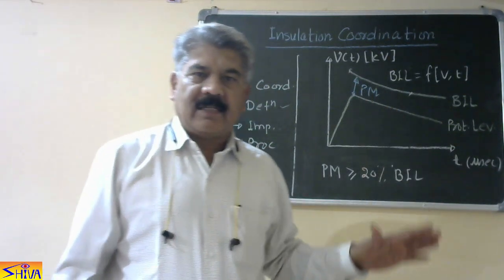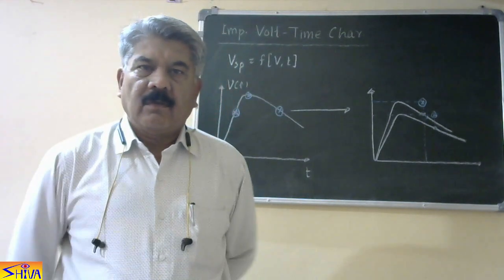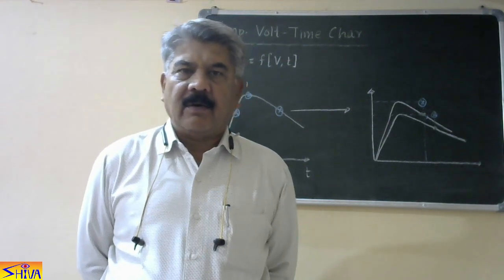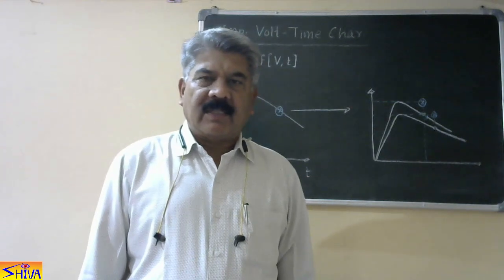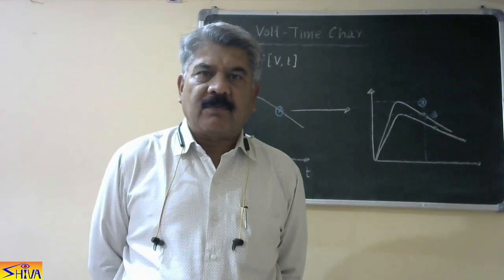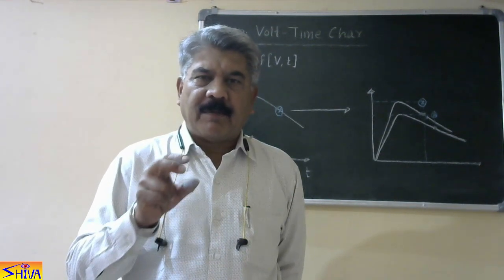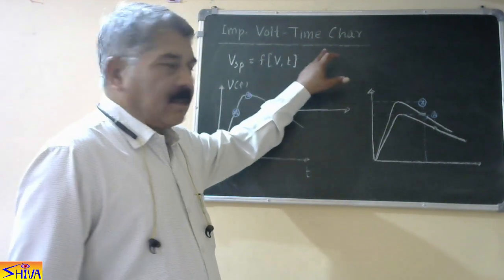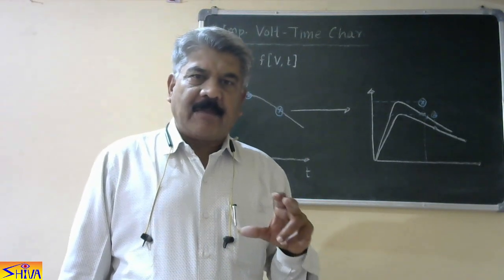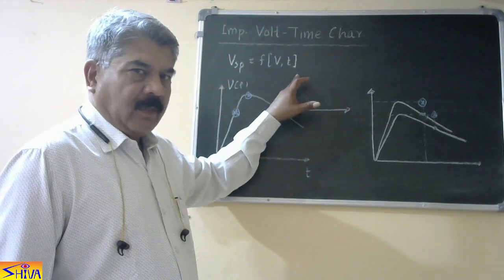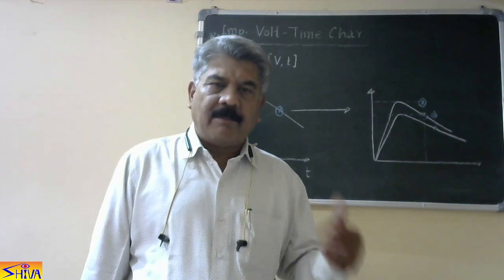Now let us see how the impulse volt-time characteristic is constructed. The impulse volt-time characteristic is the characteristic of spark over voltage versus time obtained with a standard 1.2 by 50 microsecond impulse voltage wave. A series of standard 1.2 by 50 microsecond waves are applied on the insulation and the spark over point is noted. The spark over voltage depends on the voltage as well as the time of application, so we express it as a function of voltage and time. When we apply a standard impulse voltage wave of high amplitude, there are three possibilities.